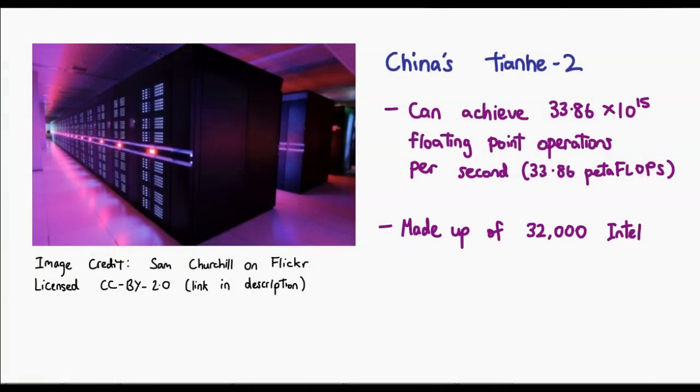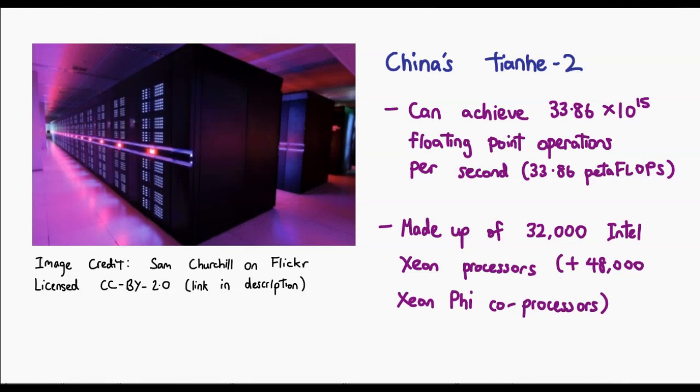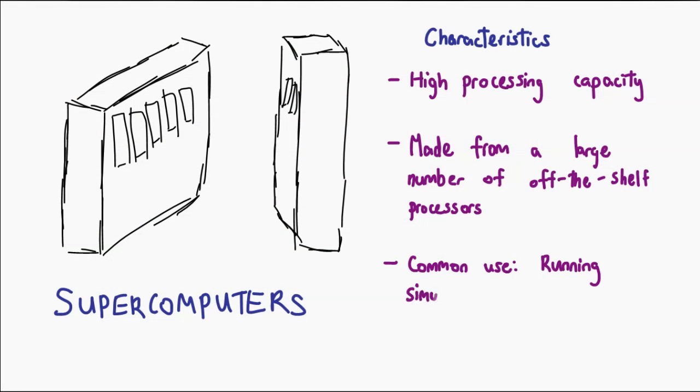In fact, the fastest supercomputer in the world right now puts together 32,000 Intel Xeon processors, which are processors that are available off-the-shelf. This large amount of computational power is normally used to run simulations, things like testing stress or aerodynamics of products, or running traffic simulations. All these operations are very calculation intensive, which is why it makes sense to use something with a lot of computational power. And that is a supercomputer.